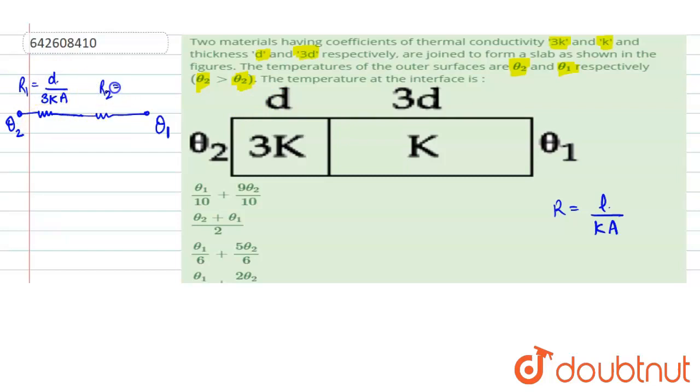Similarly, we can write the value of R2. That is L upon Ka. Length is 3d upon K into A.